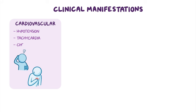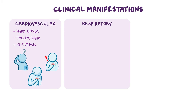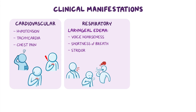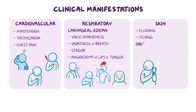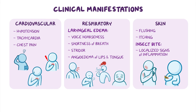Clinical manifestations of anaphylactic shock can be cardiovascular, such as hypotension, tachycardia, and chest pain, and respiratory, which are typically associated with laryngeal edema and include voice hoarseness, shortness of breath, and stridor. Additionally, there's often angioedema of the lips and tongue. There could also be skin manifestations, which typically include flushing and itching. If the cause is an insect bite, localized signs of inflammation at the site of the bite are often present.